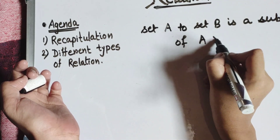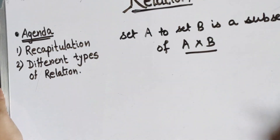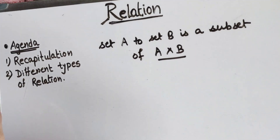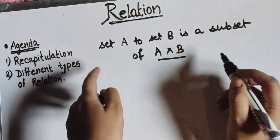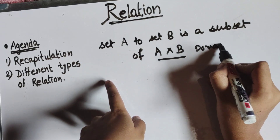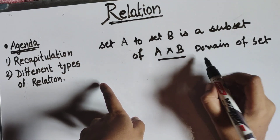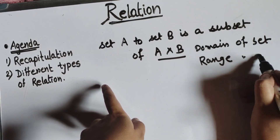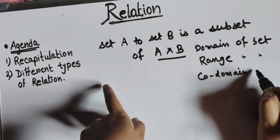Now the question is: what is A cross B? Let's take an example and then determine the domain, range, and co-domain of that set.